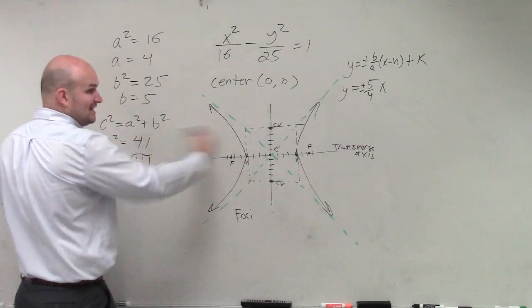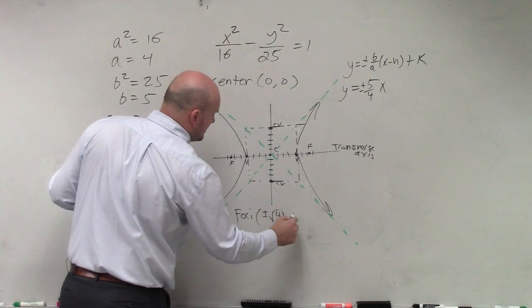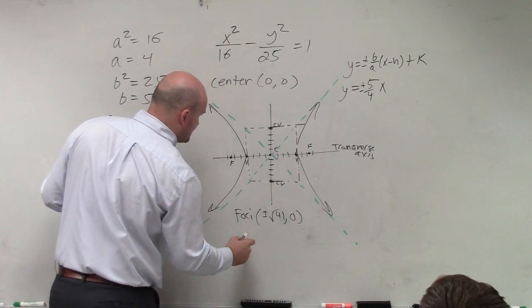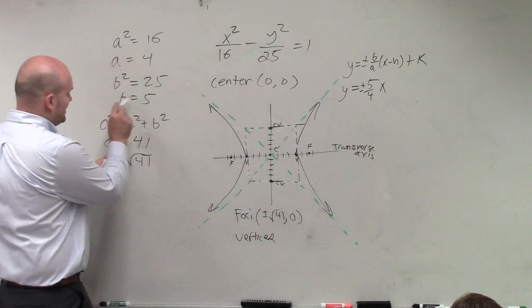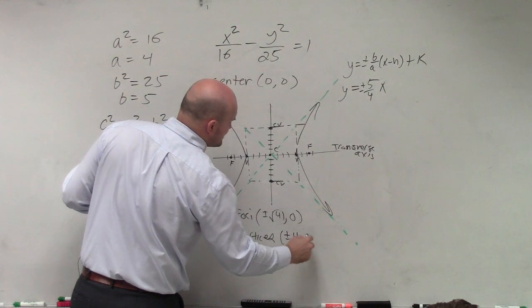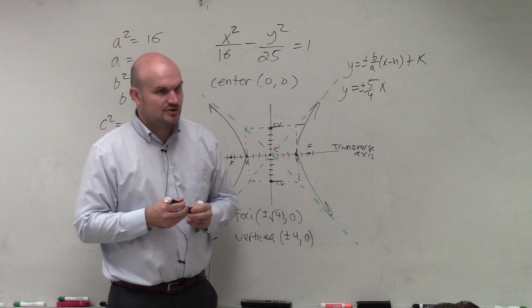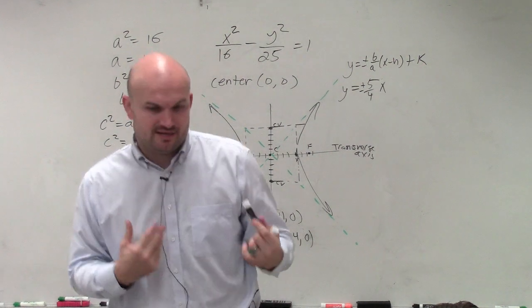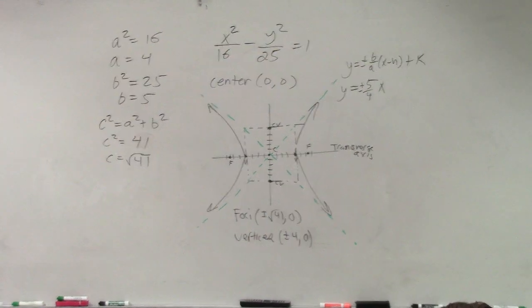Foci is going left and right, right? So it's left and right c. So I could do plus or minus square root of 41 comma 0. And my vertices is plus or minus 4 comma 0. Vertices, foci, and center as well as asymptotes. So it's kind of the same thing. The only thing I'm kind of changing on you is your a squared, your b squared.